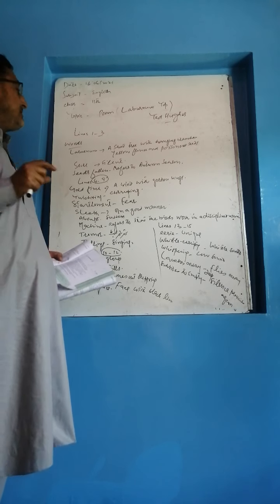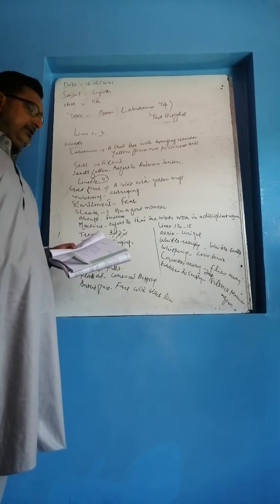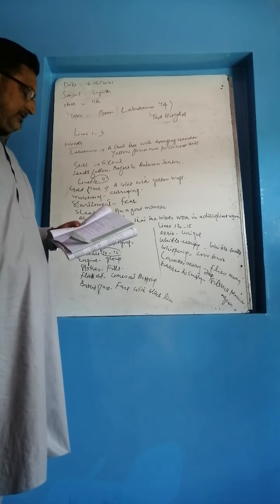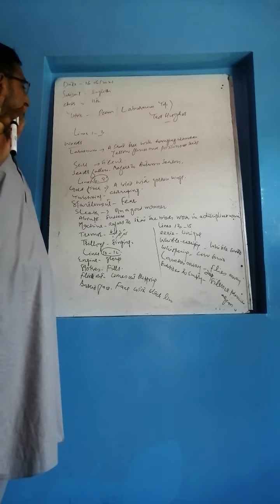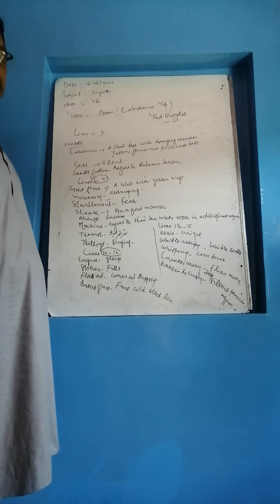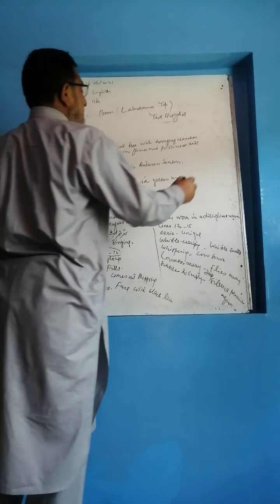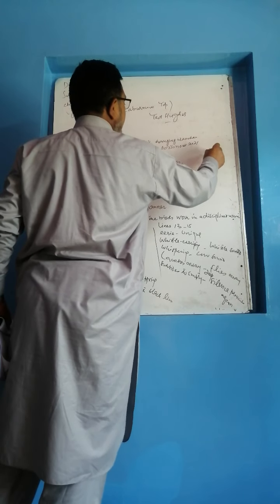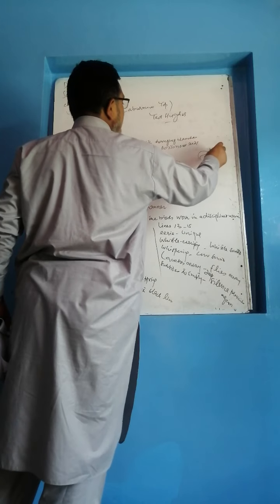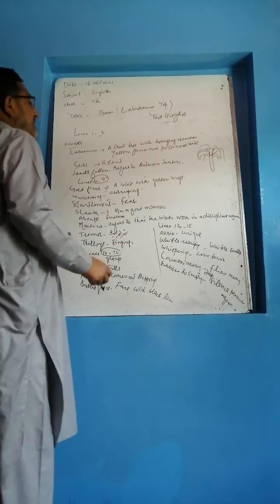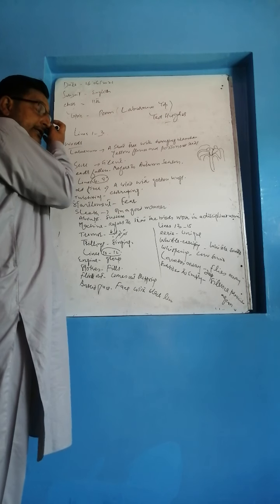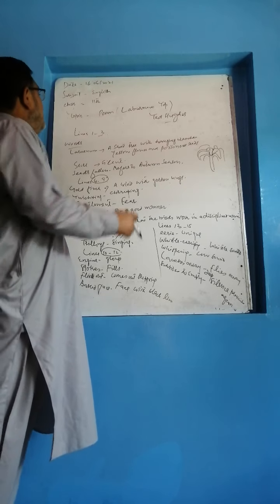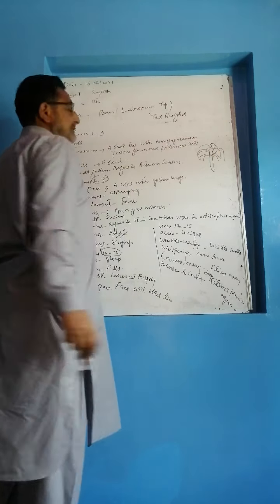In the first three lines of the poem, the poet describes the tree, the Laburnum Top. Laburnum is a short tree with hanging branches, just like this. It has yellow flowers and poisonous seeds. So the poet here discusses about the top, the top of the tree.